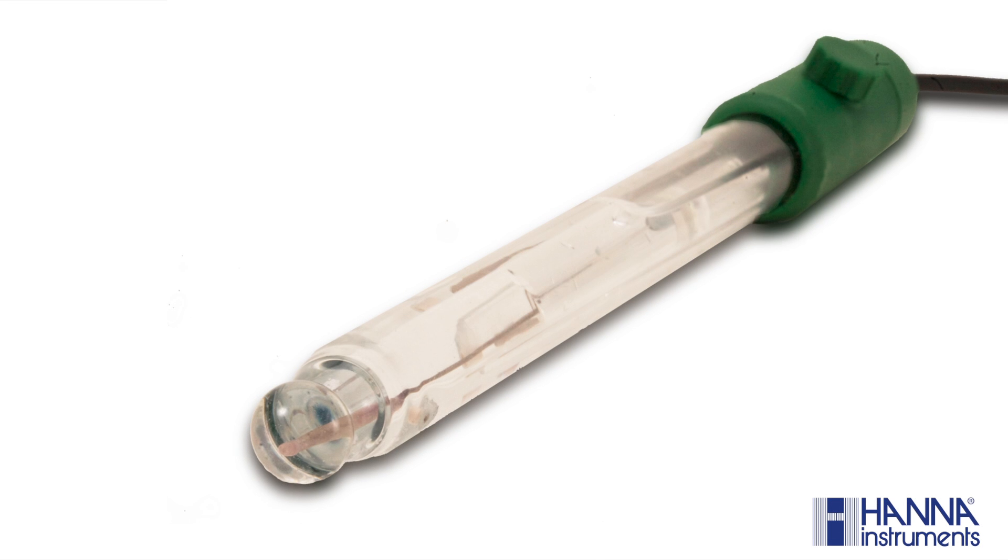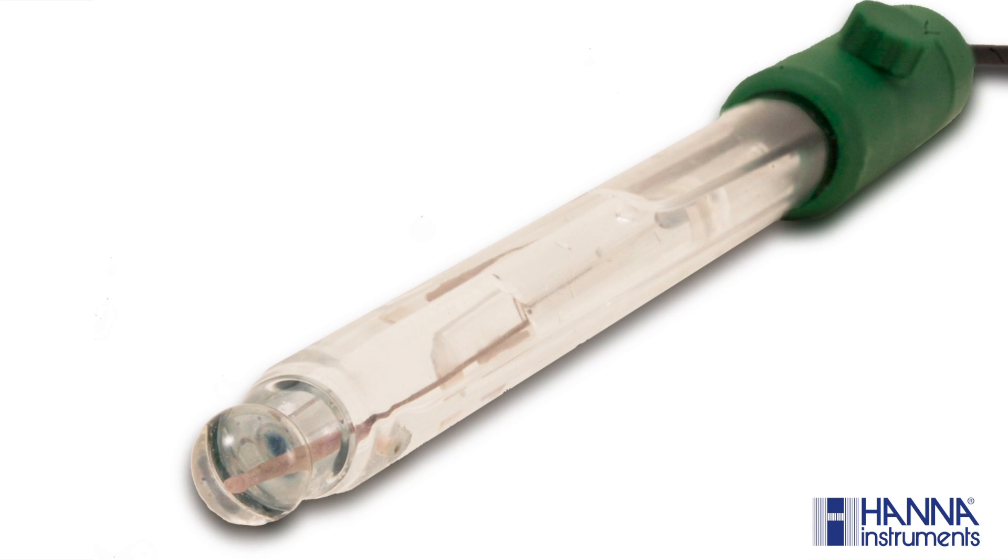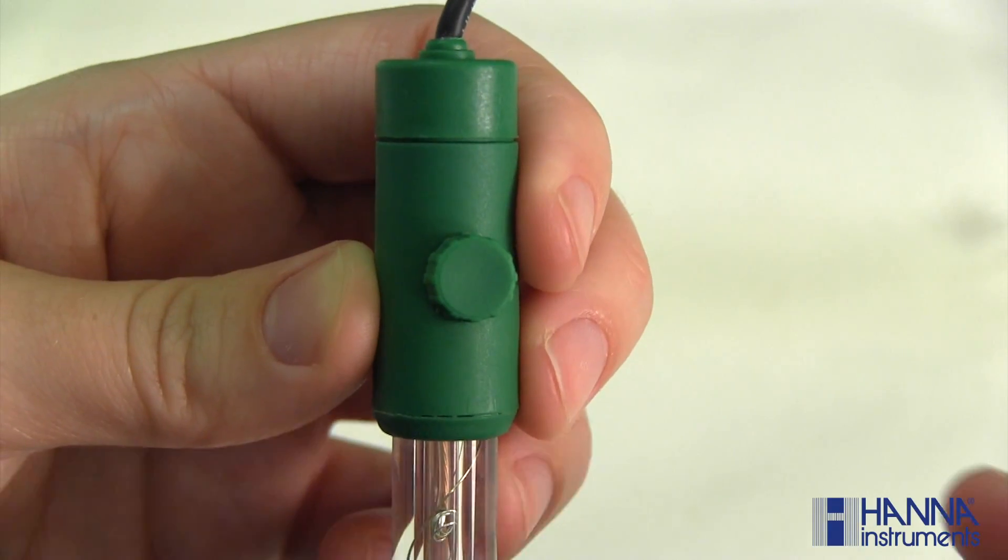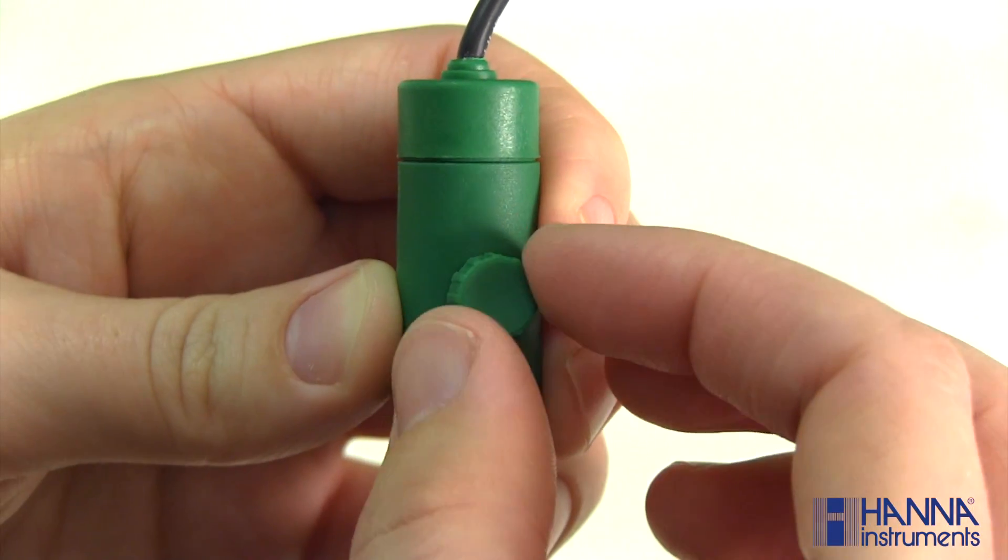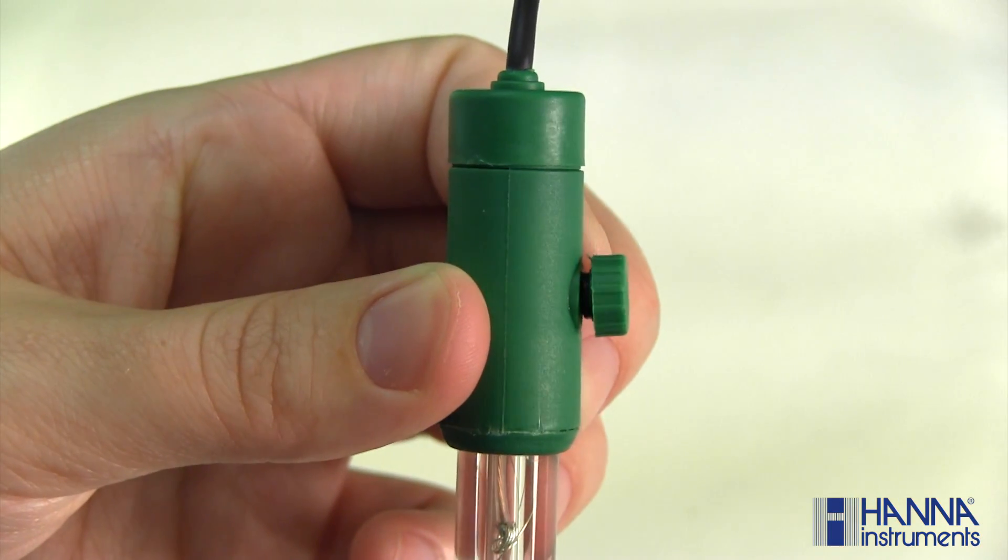Hanna Instruments supplies liquid filled electrodes with their benchtop pH meters. One of the crucial steps in producing accurate and reliable readings with these electrodes is to make sure the reference fill hole is open while taking a measurement.